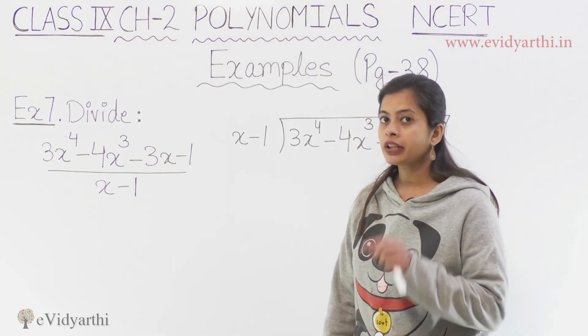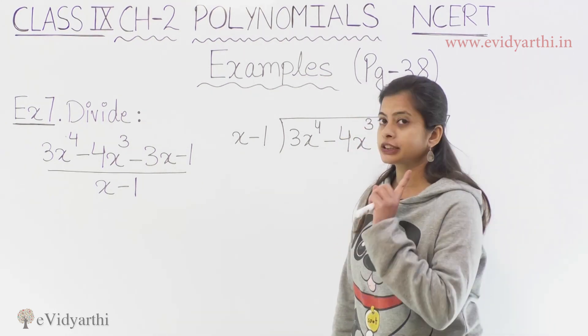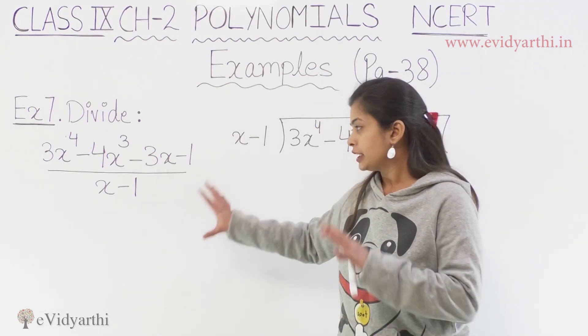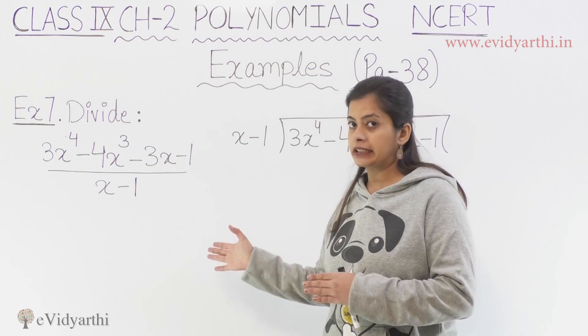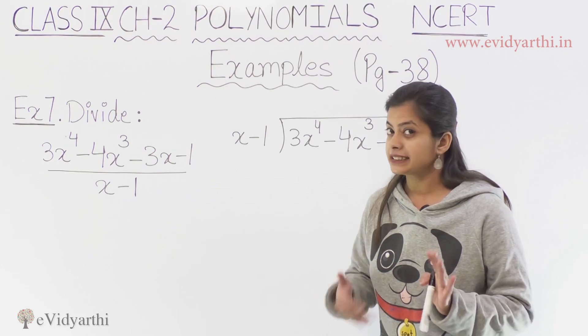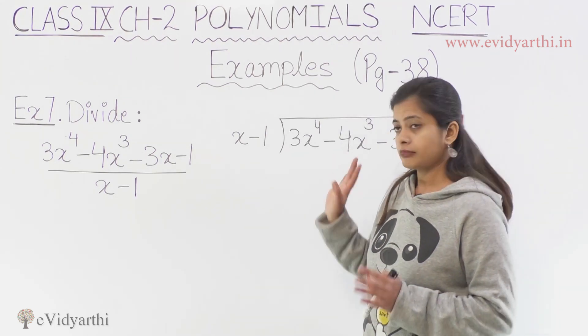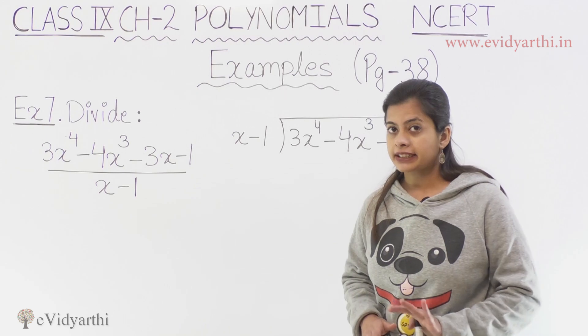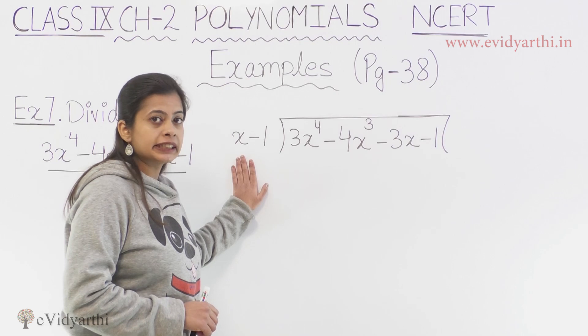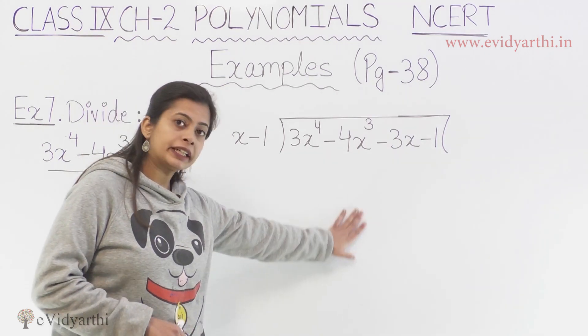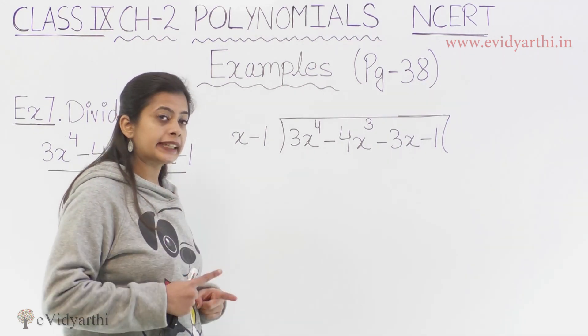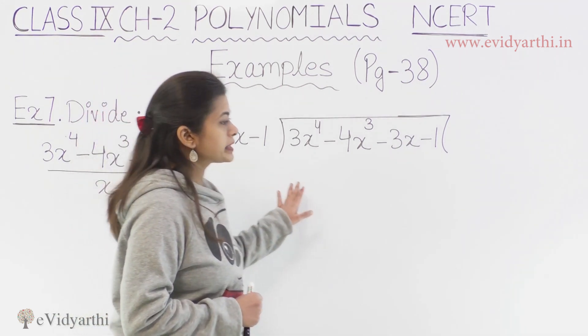divide polynomial 3x^4 minus 4x^3 minus 3x minus 1 by x minus 1. So we have to simply write this as the divisor and this is our dividend. So finally what is the quotient and remainder? And if you want, then you can verify this at the end.